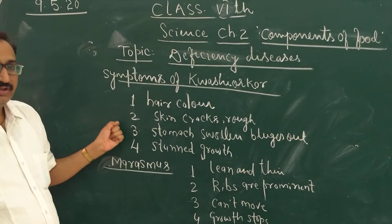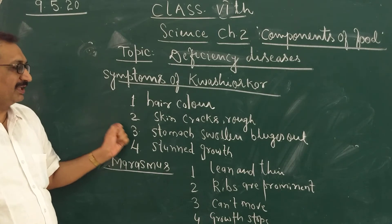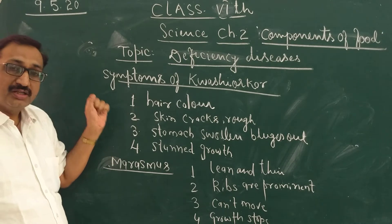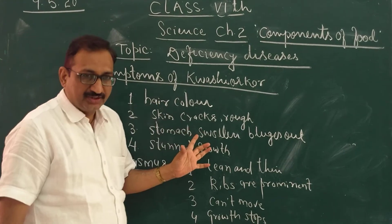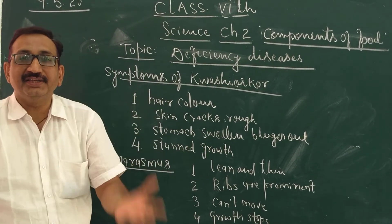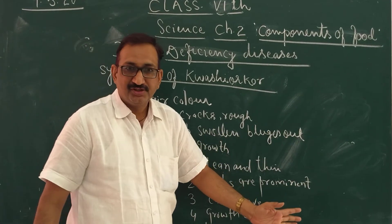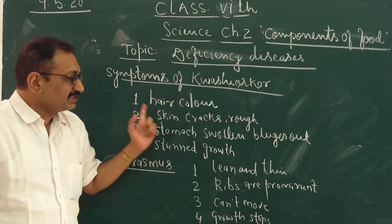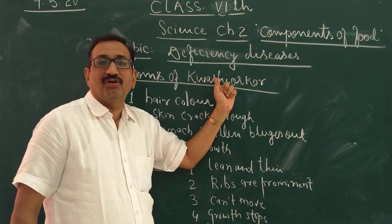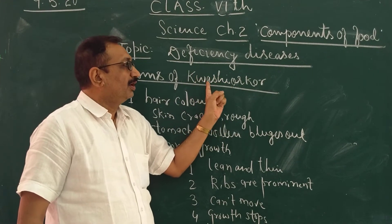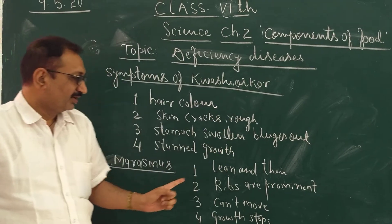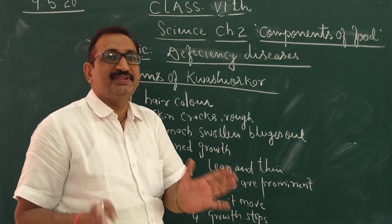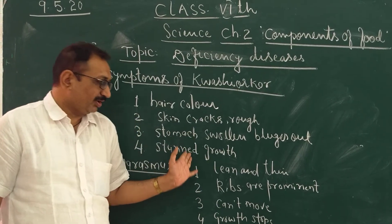The third symptom, which is the most prominent, is that the belly of the child becomes swollen — very large. This is due to Kwashiorkor, which is only a protein deficiency disease. The fourth symptom is stunted growth — the growth of the child stops there only, and development stops.